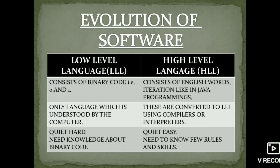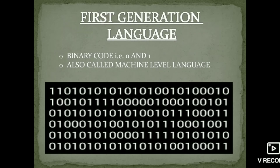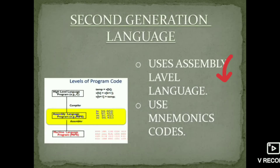Next is first generation language. First generation language uses binary code — zeros and ones — and is also called machine-level language. You can see this is binary code.